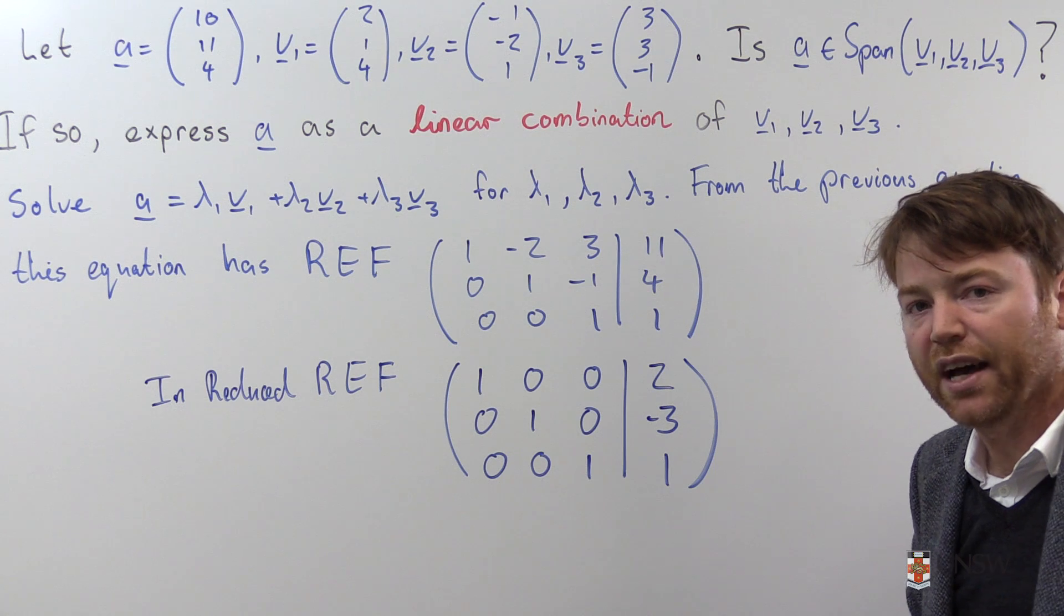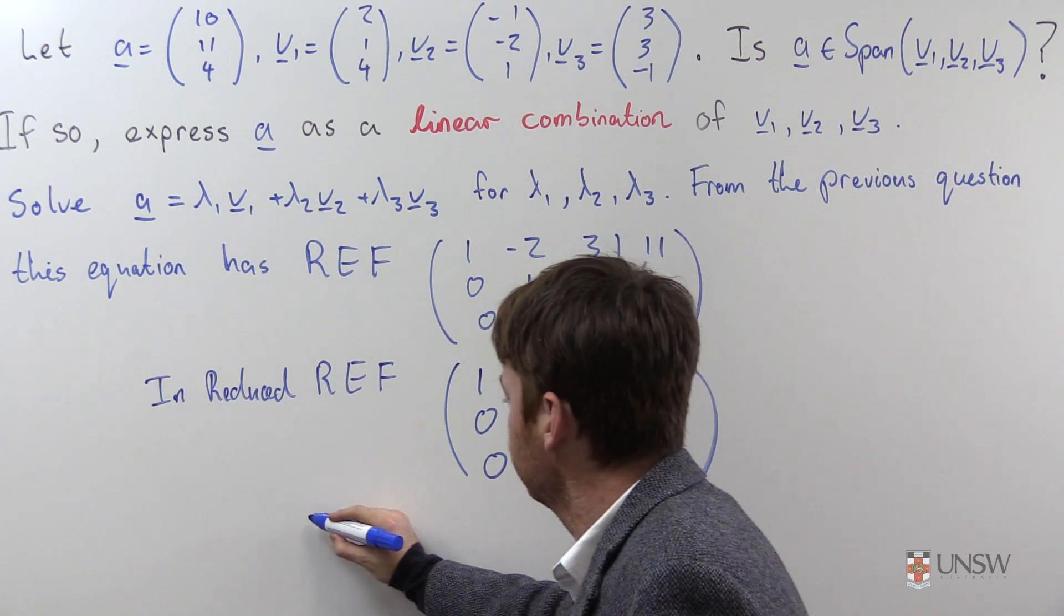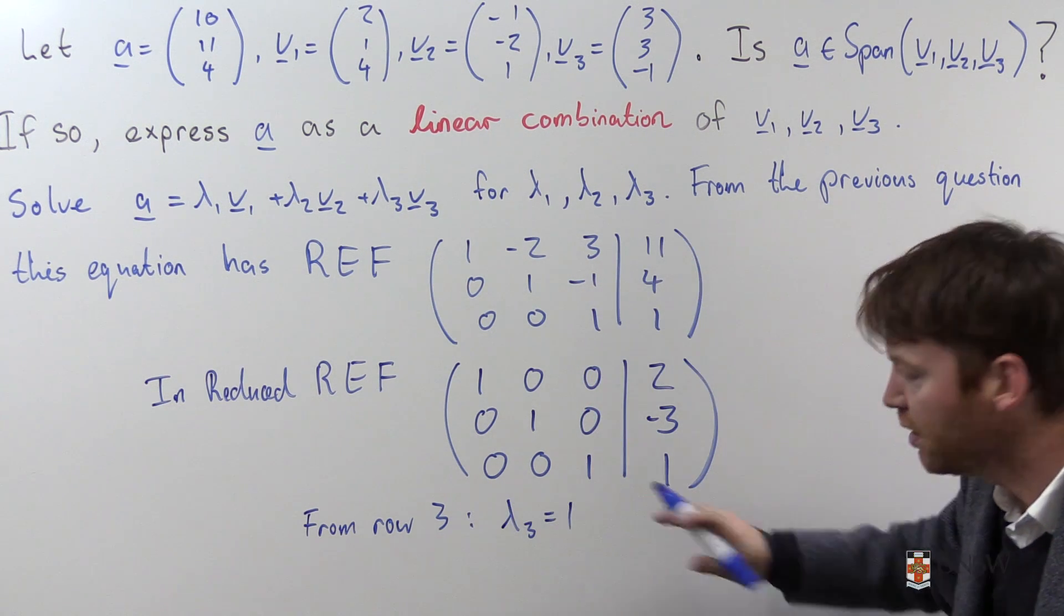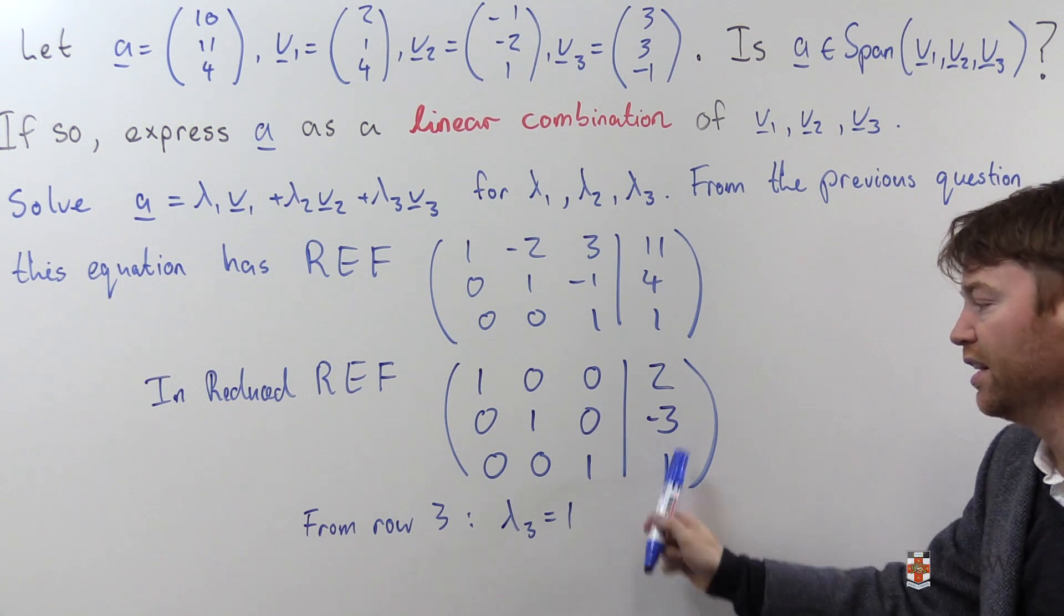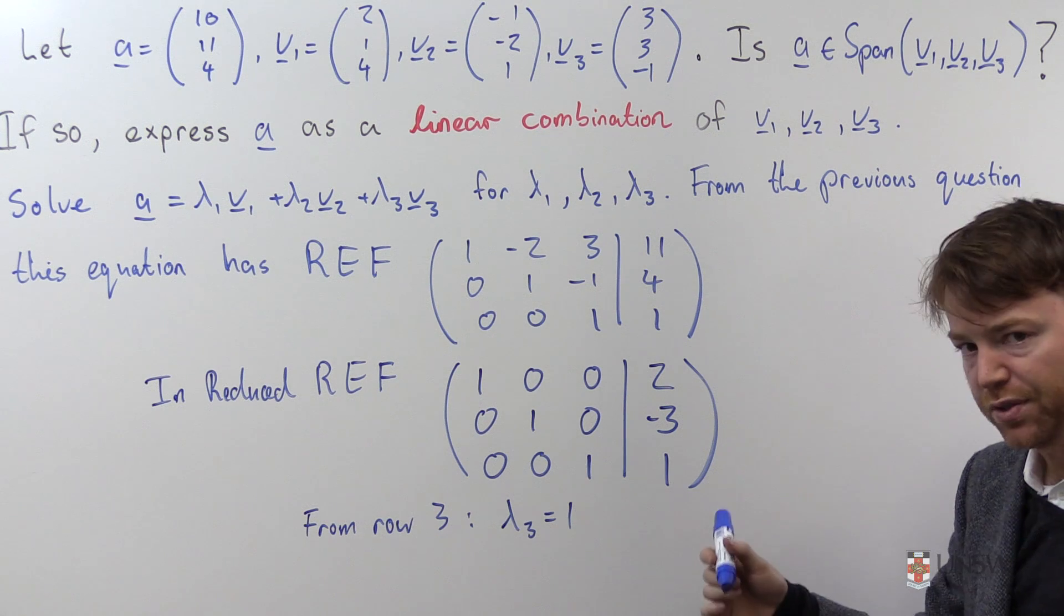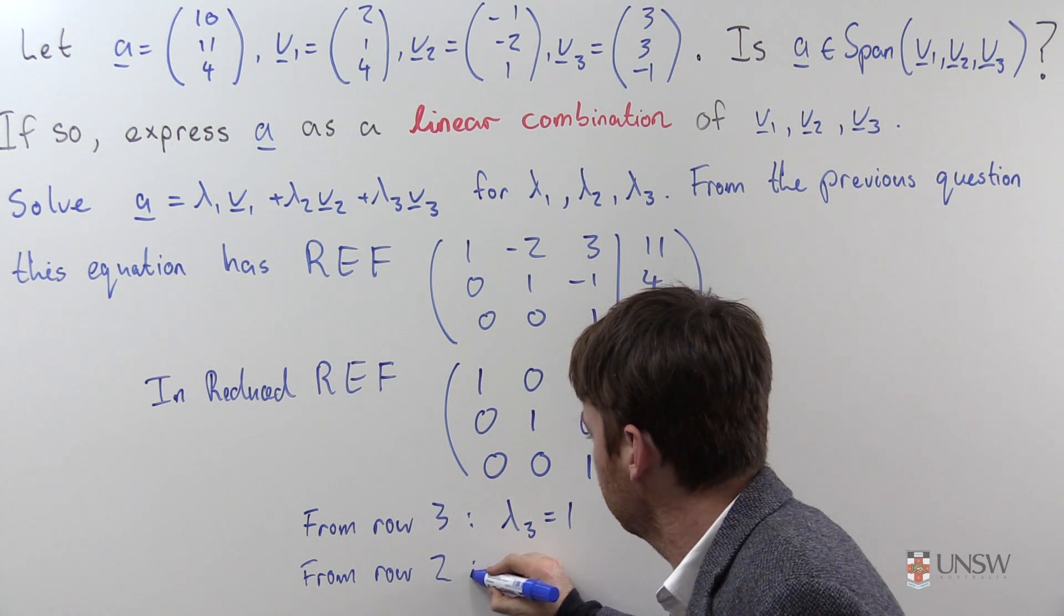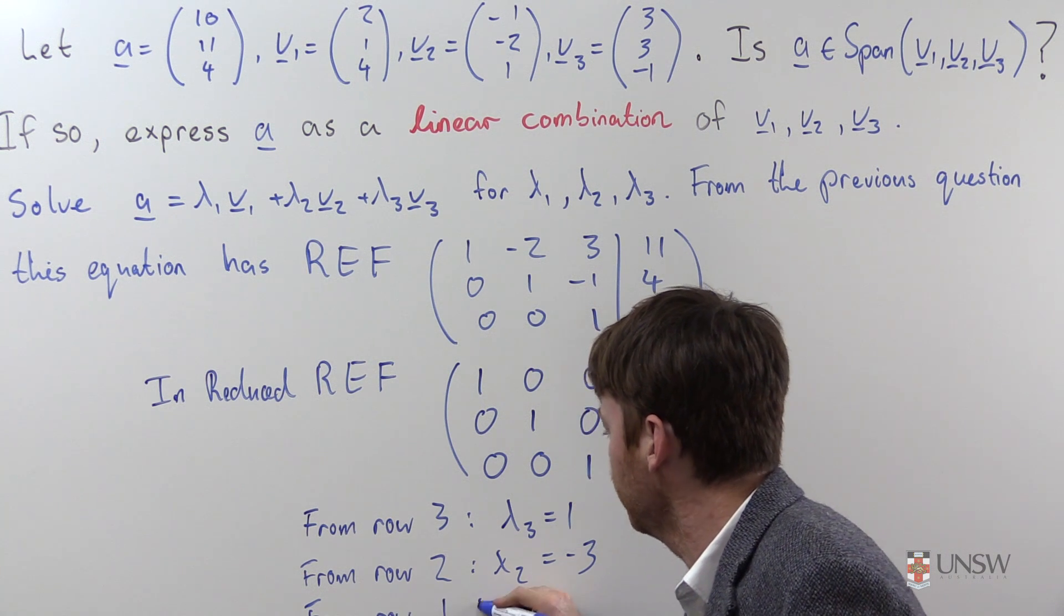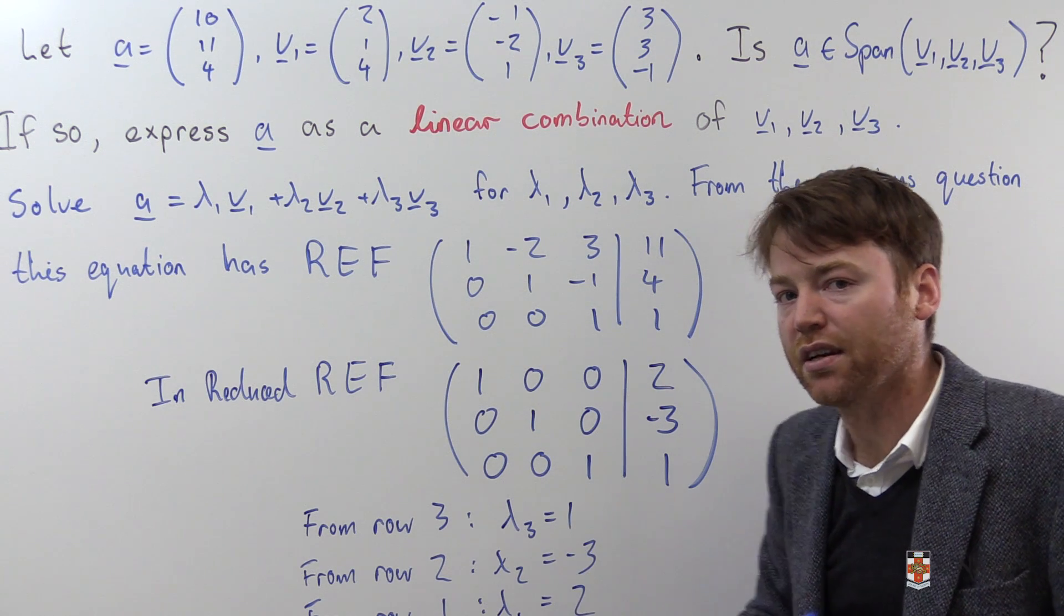And this allows you to unpack the coefficients directly. So from row 3, we know that lambda 3 is equal to 1. Literally, this final row says 0 times lambda 1 plus 0 times lambda 2 plus 1 times lambda 3, so this is just lambda 3, is equal to 1. Similarly, from row 2, we know that 0 lambda 1 plus 1 lambda 2 plus 0 lambda 3, so this is just lambda 2, is equal to minus 3. lambda 2 is equal to minus 3, and from row 1, we know that lambda 1 is equal to 2.